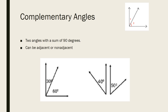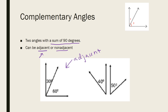The first definition we're going to talk about is what it means to be complementary. Complementary angles, if you think back to our vocab from day one, are angles that have a sum of 90 degrees. These angles can be adjacent, which means touching, or they can be non-adjacent, which means not touching. The two that are touching would be your adjacent angles, and the two that aren't touching would be your non-adjacent angles.